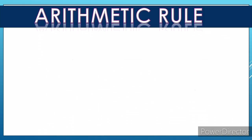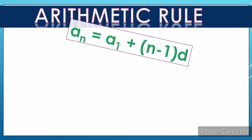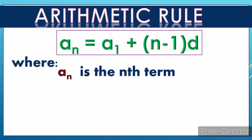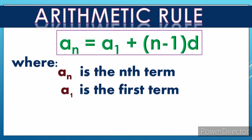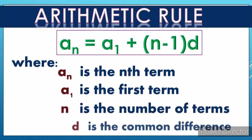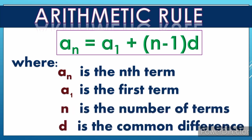Let's recall the arithmetic rule, which is a sub n equals a sub 1 plus the quantity of n minus 1 times the common difference d, where a sub n is the nth term, a sub 1 is the first term, n is the number of terms, and d is the common difference.